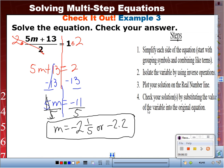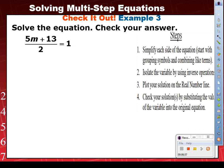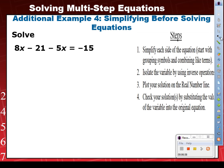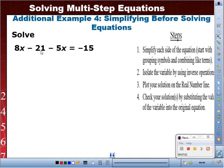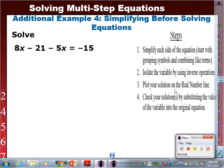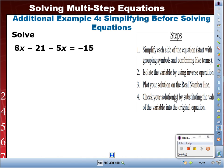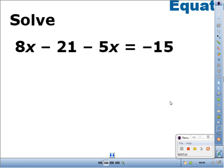All right. Let's move on. Everybody with me so far? Okay. Example 4. Copy this one. We got 8x minus 21 minus 5x equals negative 15. Copy that, please. Okay. Here we go. Watch. Writing utensils down. Let me show you something really quick.